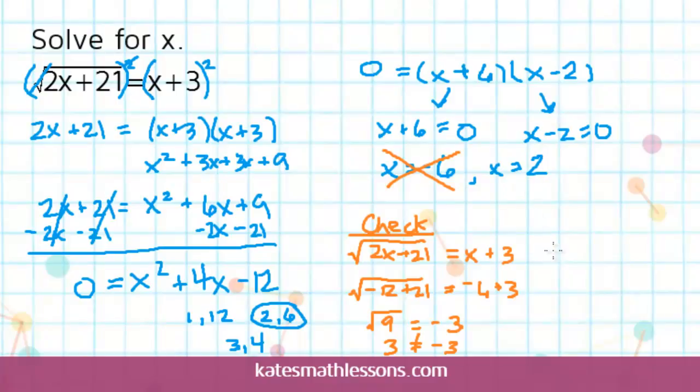So if I plug in a 2 where x is, I would get the square root of 2 times 2 is 4. So I have a 4 plus 21, and then 2 plus 3 is 5.